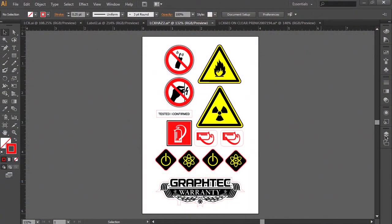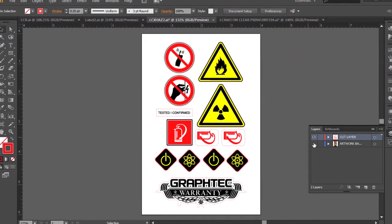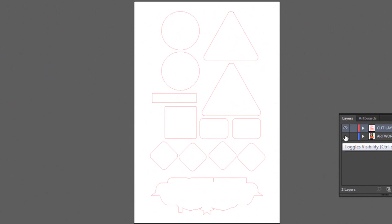The process starts with designing your label. This includes creating a cut path used for cutting the border of the label. And as mentioned previously, these can either be basic shapes or more complex paths that will contour the design.